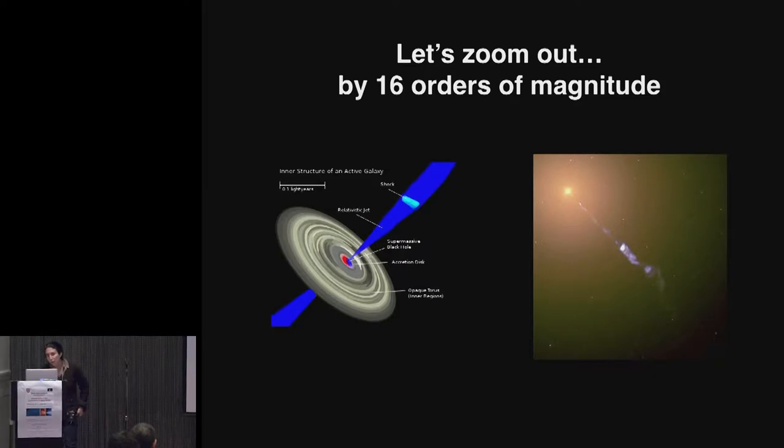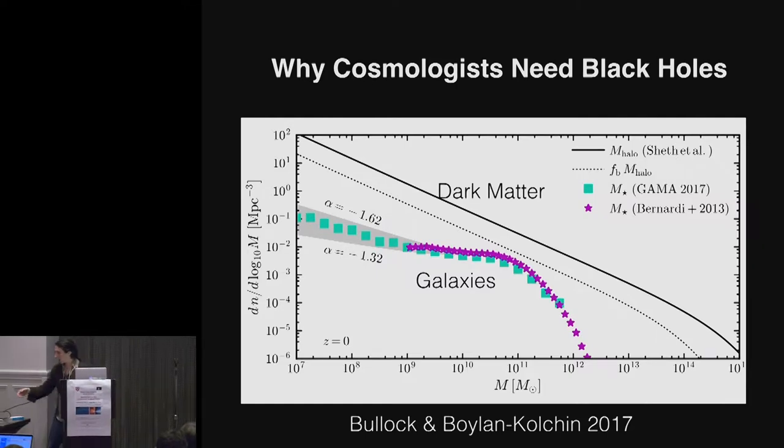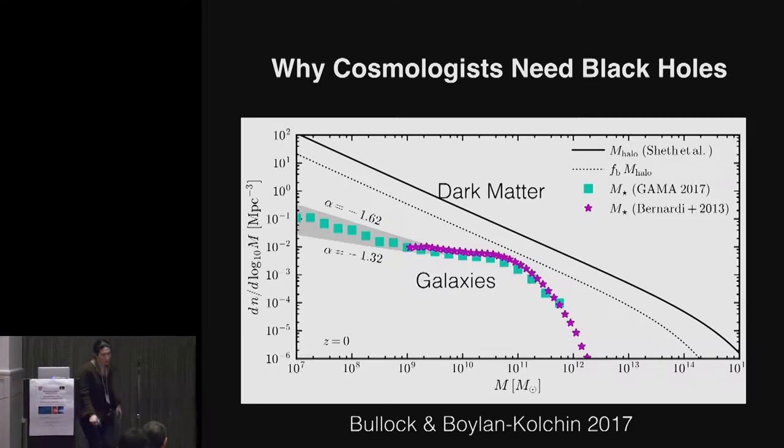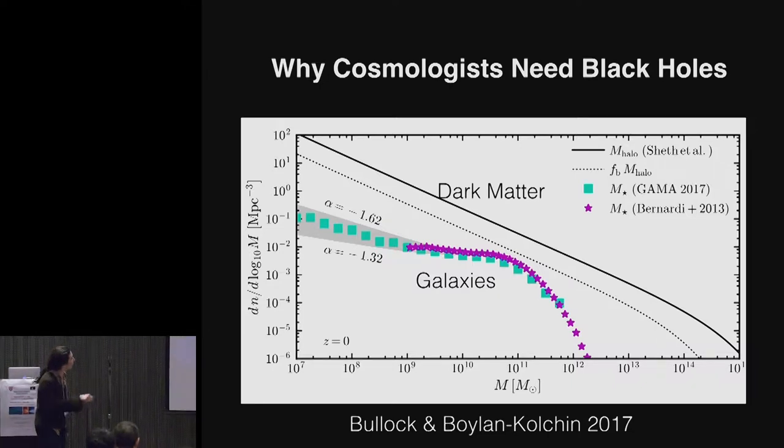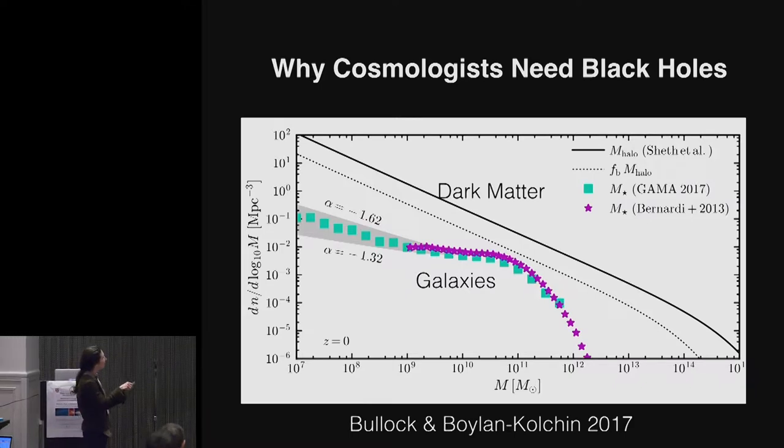People who worry about how galaxies grow find themselves really needing the very high binding energies of supermassive black holes, and that's the reason why it's summarized here. So what I'm just showing is the mass function that we expect for dark matter halos.